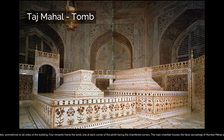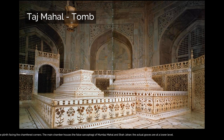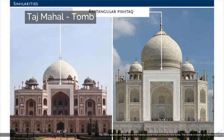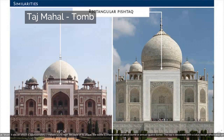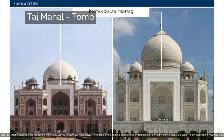The main chamber houses the false sarcophagi of Mumtaz Mahal and Shah Jahan; the actual graves are at a lower level. The most spectacular feature is the marble dome that surmounts the tomb. The dome is nearly 35 meters, or 115 feet, high — close in measurement to the length of the base — accentuated by the cylindrical drum it sits on, which is approximately 7 meters, or 23 feet, high. Because of its shape, the dome is often called an onion dome or amrut guava dome. The top is decorated with a lotus design, and the shape is emphasized by four smaller domed chatris placed at its corners, which replicate the onion shape of the main dome.